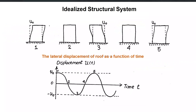Let's go back to our idealized structural system. With this idealization, let's investigate a simple structure that is initially at rest and is displaced laterally by a distance u-naught. We try to symbolize or notate our displacement by u — at times we can also use x. If we recall our dynamics of rigid bodies from the lower years...